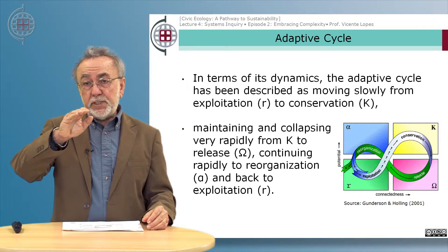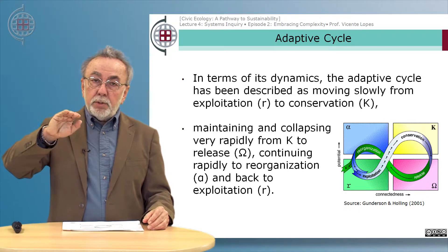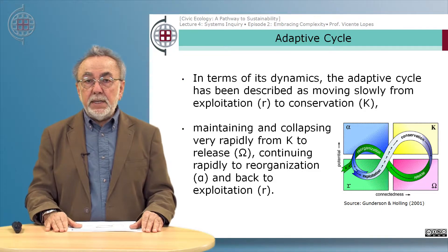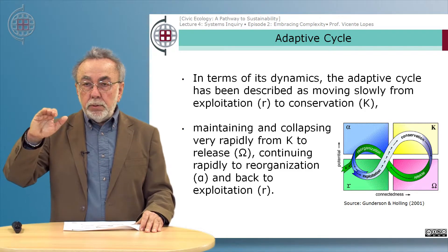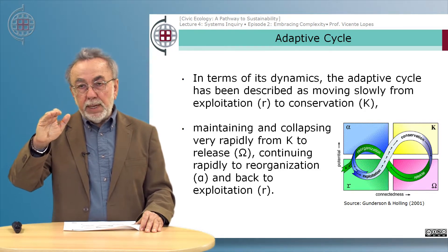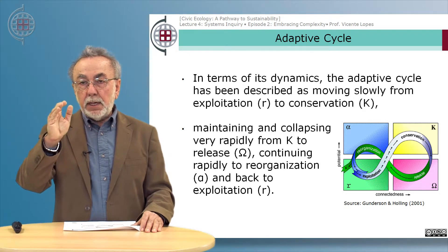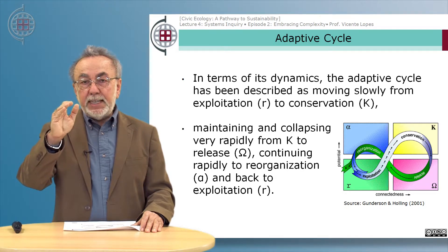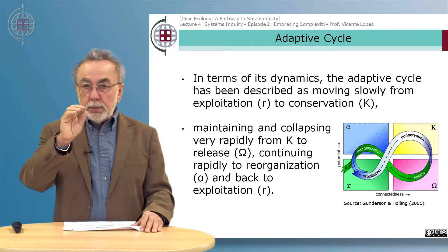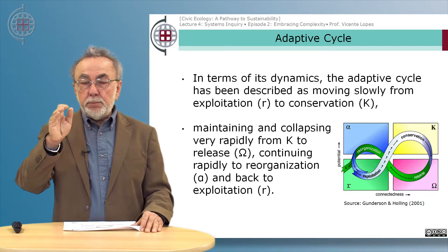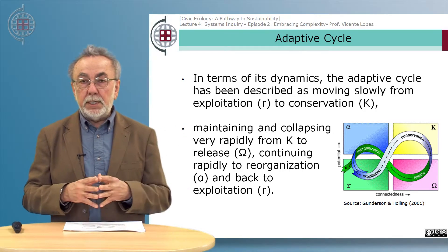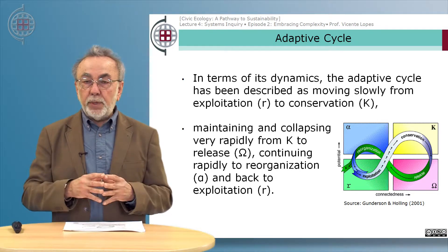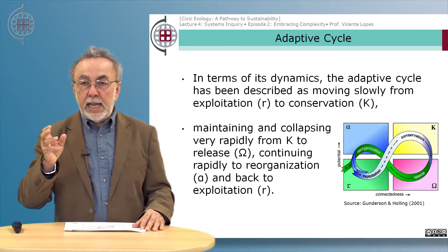The adaptive cycle is described as a cycle made up of four phases. It moves slowly from the exploitation phase (the R phase) to the conservation or K phase. Then it maintains or collapses to a third phase — the omega or release phase — continuing. The movement in the back loop from omega to alpha (release to reorganizing phase) is very fast, as opposed to the front loop from exploitation to conservation which is very slow. All complex adaptive systems and all living systems behave this way — this is how they evolve, renew themselves, collapse, and change.